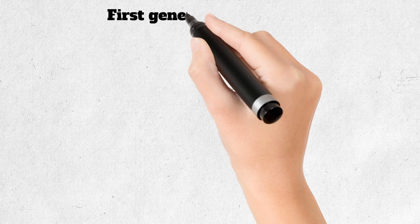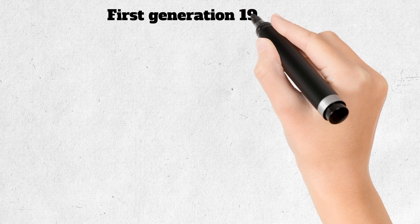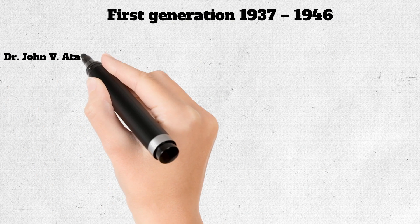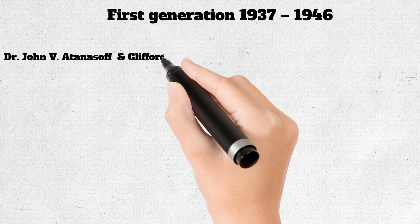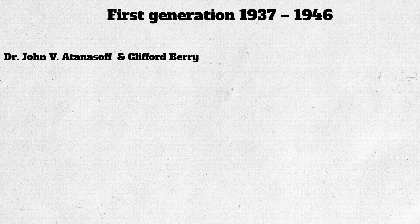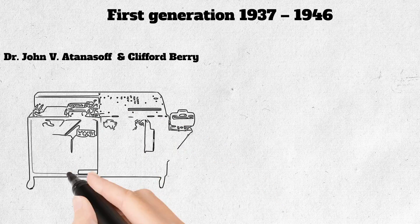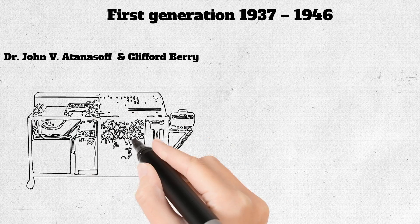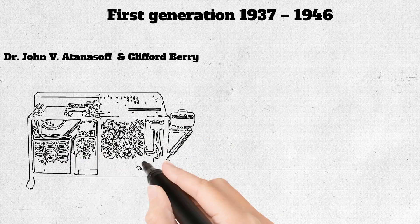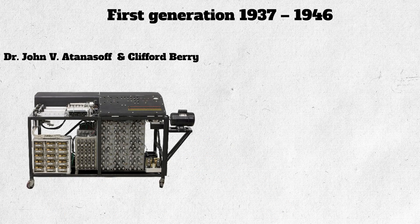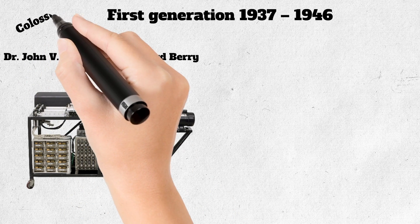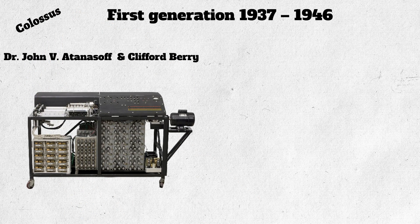The first generation began in 1937 when the first electronic digital computer was built by Dr. John V. Atanasoff and Clifford Berry. It was called the Atanasoff-Berry computer. In 1943, an electronic computer, the Colossus, was built for the military.